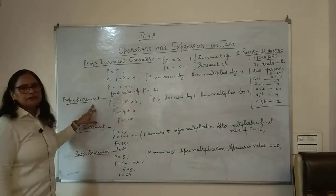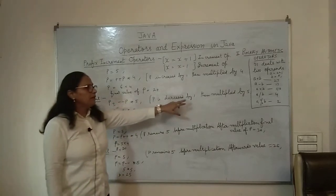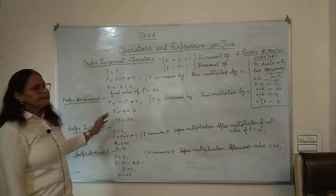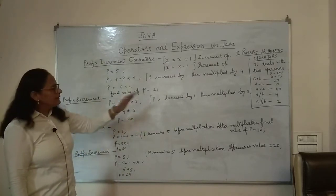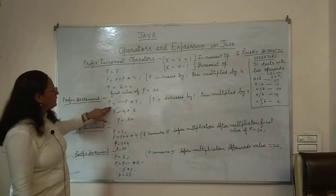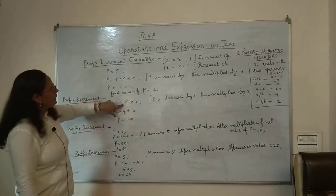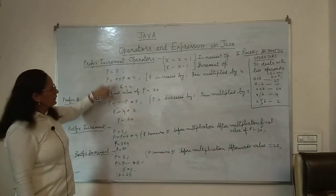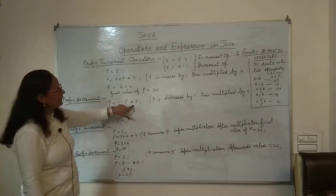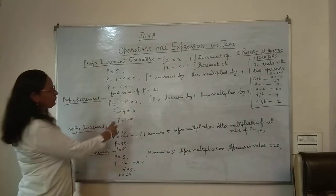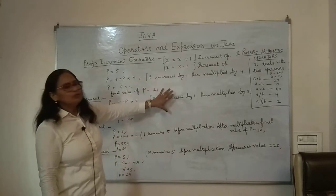Next is the prefix decrement operator. Again, the value will be decreased by 1 first and then multiplied, since it is prefix. P = --P * 5: if P's value is already 5, then --P will make it 4, and then multiplied by 5 it will be 20.